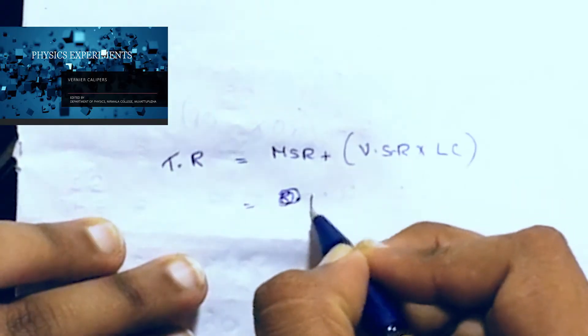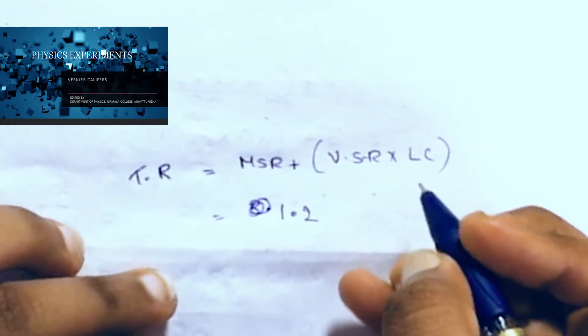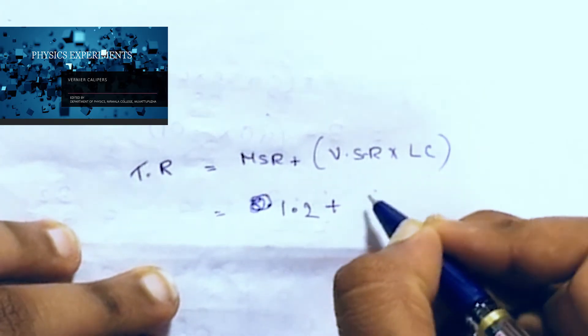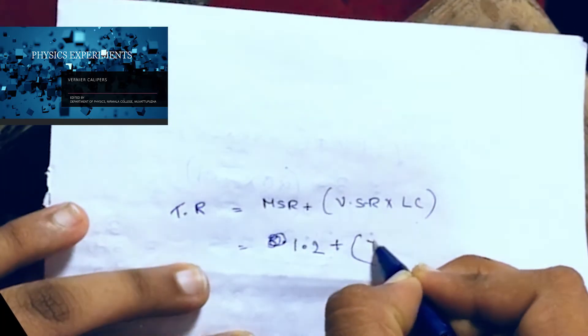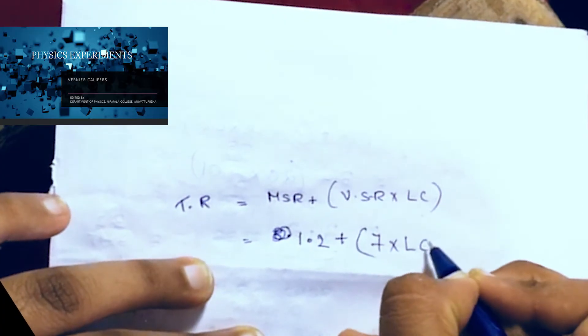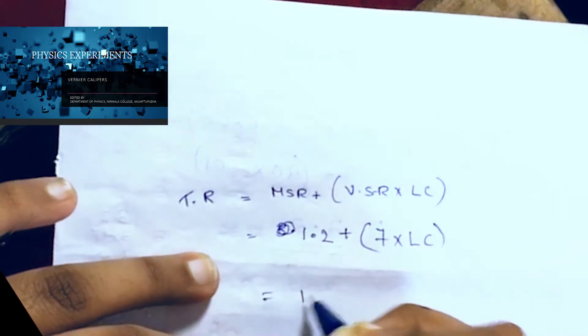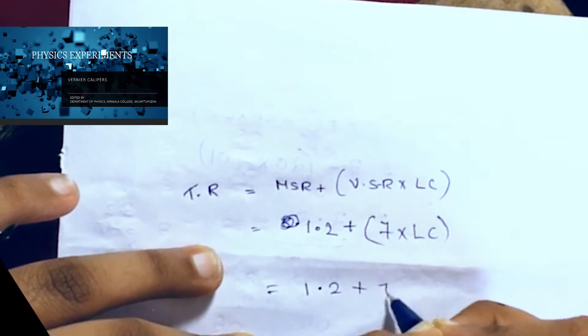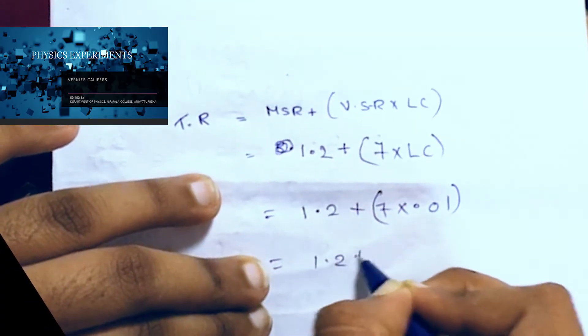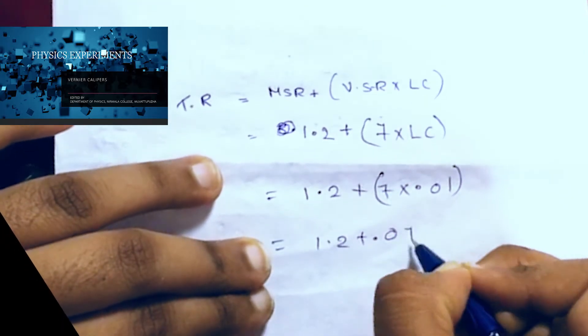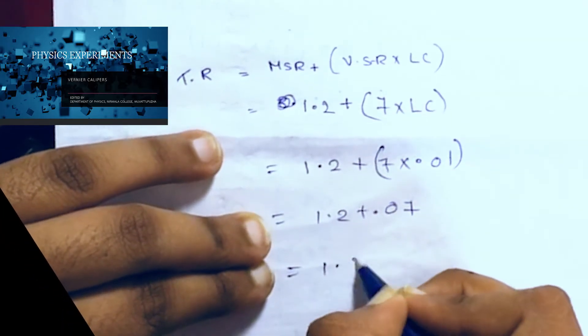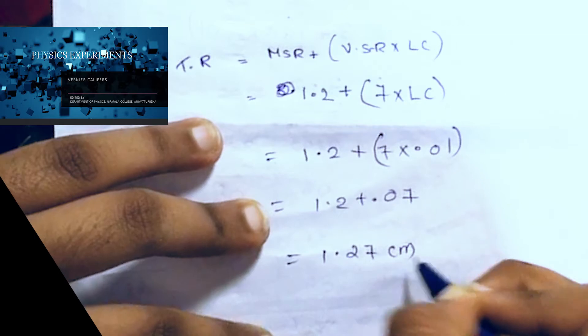So first, 1.2 MSR plus 7 VSR into least count. That is 1.2 plus 7 into 0.01, which gives 1.2 plus 0.07, equals 1.27 centimeter.